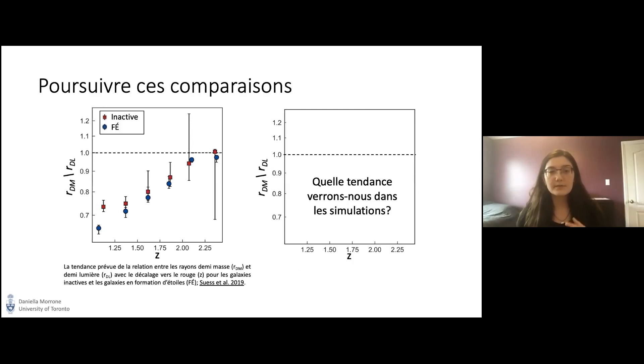La tendance de la relation entre les rayons demi-masse et demi-lumière aux valeurs du décalage vers le rouge varié est démontrée dans ce graphique. Cette tendance est ce que nous nous attendons à trouver dans notre recherche pour les simulations.